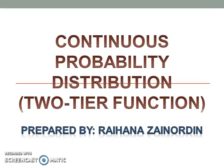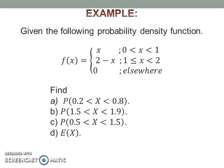Continuous Probability Distribution — Two-Tier Function. Let's look at this example.